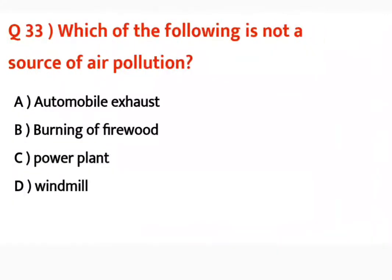Question number thirty-three: Which of the following is not a source of air pollution? Automobile exhaust, burning of firewood, power plant — these all cause pollution. Windmill se koi air pollution nahi hota. Correct answer is windmill.